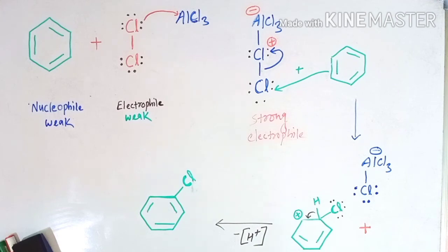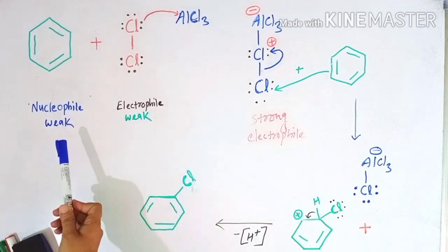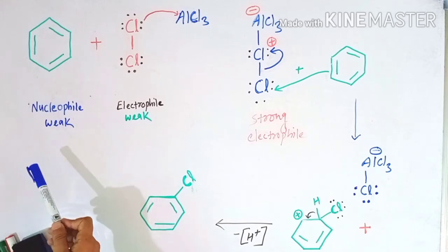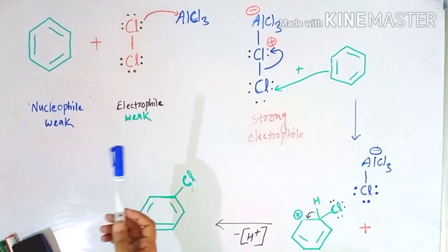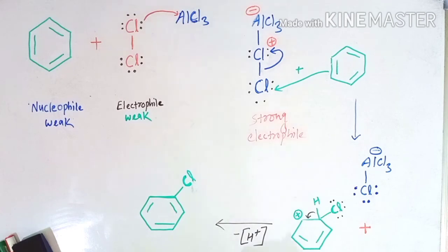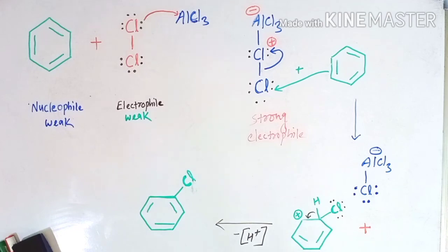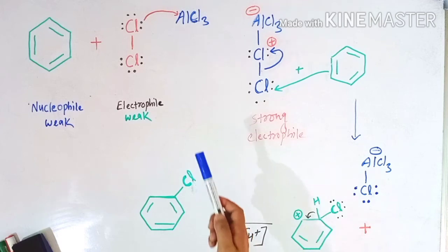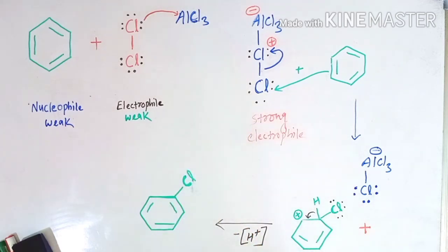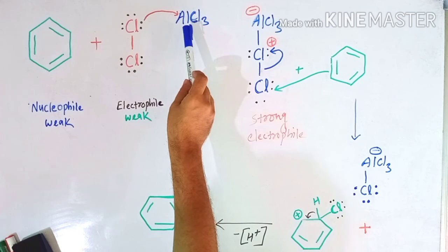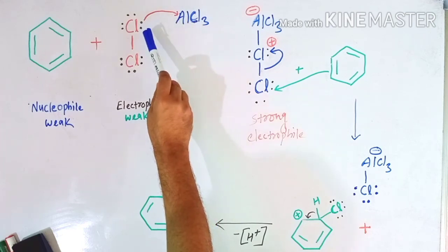The key thing to learn from this mechanism is that at the start, both species are too weak to react with each other, but AlCl3 facilitates their reaction by converting the weak electrophile into a strong electrophile. This happens because of the tendency of AlCl3 to accept a lone pair of electrons — this is the turning point. As AlCl3 accepts this pair of electrons, it automatically triggers the reaction.